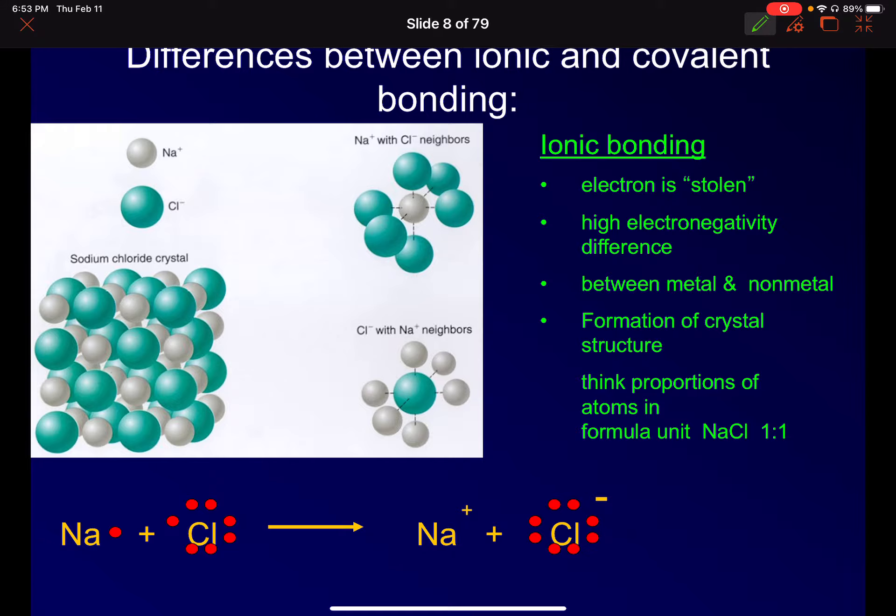So let's compare and contrast a little bit between ionic and covalent. Ionic, we talked about repeating three-dimensional patterns of positive and negative atoms or ions. And here we've got sodium metal and chlorine. And then the sodium gives up its electron so that we have a chloride ion and a sodium ion. They are electrostatically attracted. So we've got the electron that's stolen. You've got high electronegativity difference. It's between a metal and a non-metal, except for NH4 plus. It forms a crystal structure and it's proportional. So you have one-to-one, two-to-one, three-to-one, five-to-one, whatever it is, you've got this ratio of cation to anion and so on. And it's again, repeating pattern in multiple dimensions.